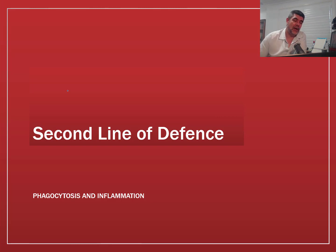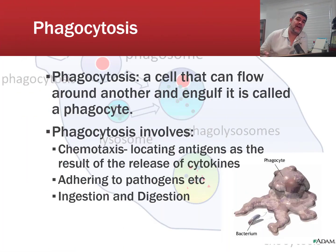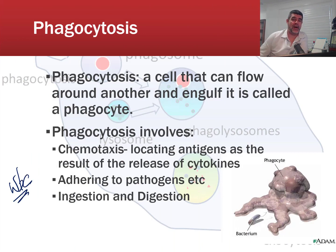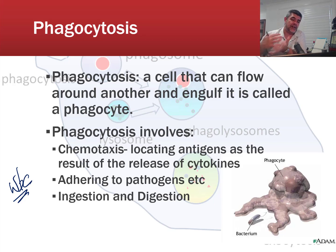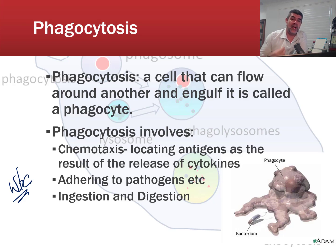In the second and third lines of defence, we're going to involve white blood cells. The difference between white blood cells in the second versus third line of defence is their specificity. Phagocytosis is the general name for cells that can flow around and engulf pathogens — they're like the body's pac-men, they just go and munch things. They're indiscriminate except that they're looking for non-self material: things the body doesn't recognise as self, and therefore tries to destroy.